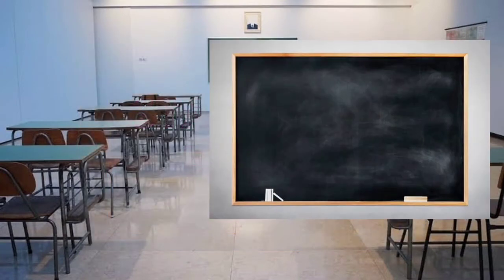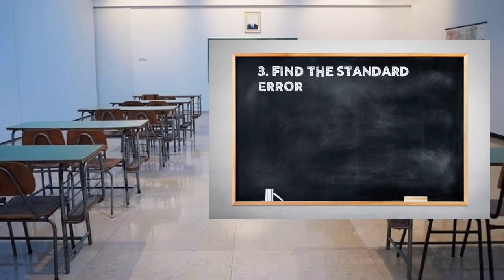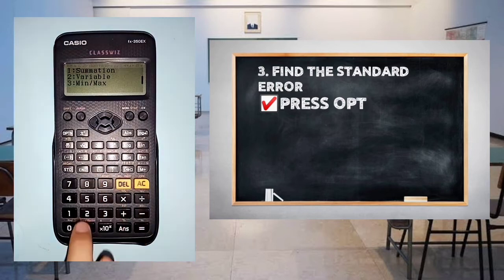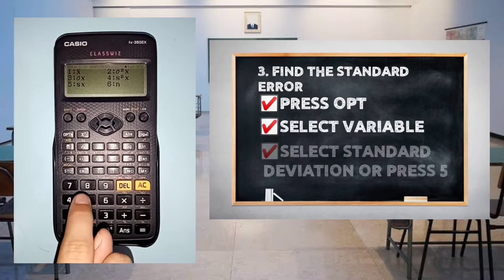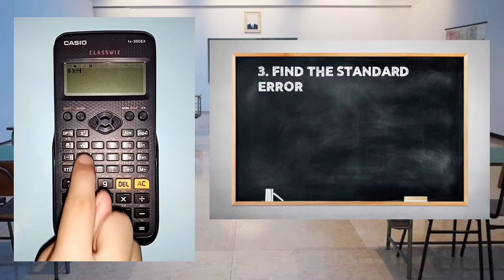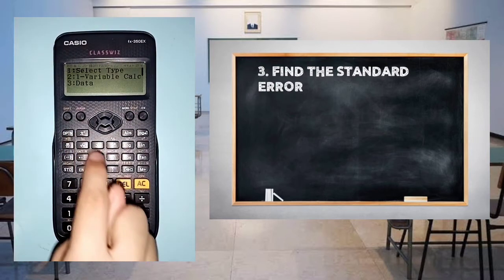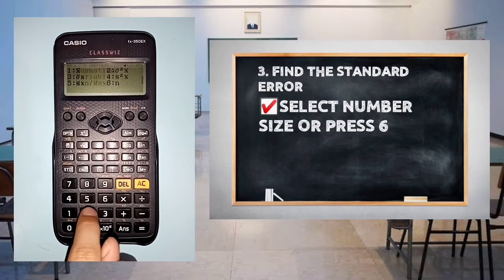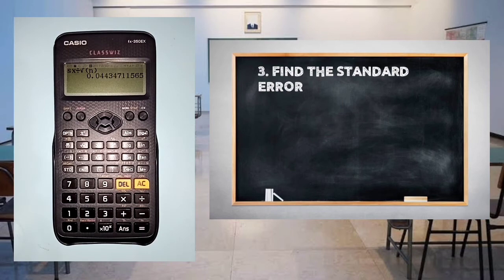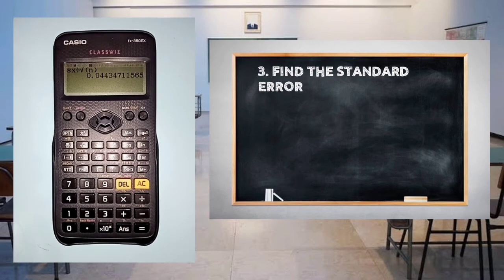For the third question, find the standard error. Press option, scroll down, and select variable. Select standard deviation or press 5, divided by square root of number size or press 6. The final answer for standard error equals ±0.0443.